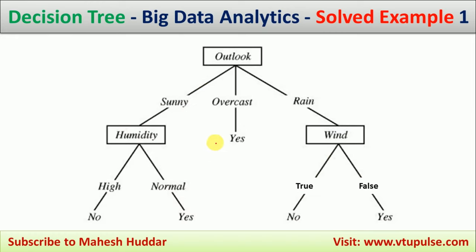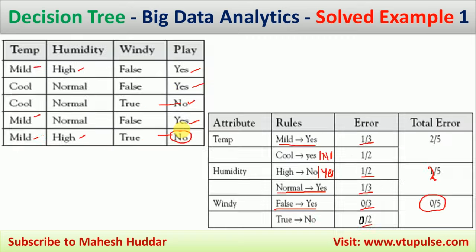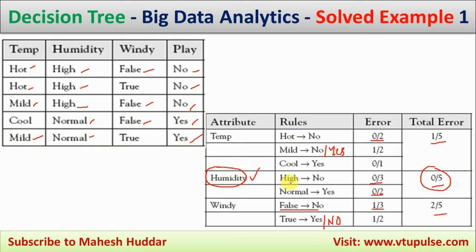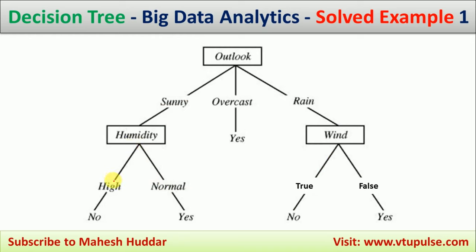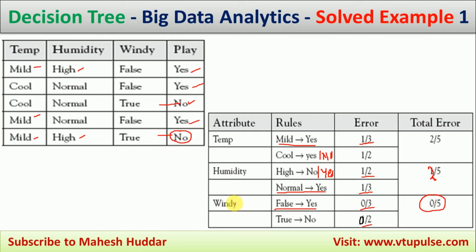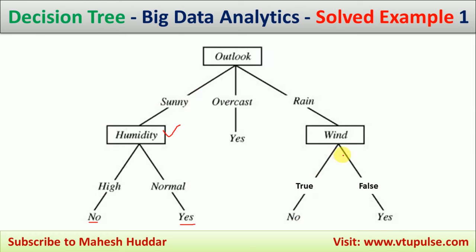Now we draw the final decision tree. For the sunny branch, humidity is the node: humidity = high gives the answer no (zero errors), humidity = normal gives the answer yes (zero errors). For the rainy branch, wind is the node: wind = false gives the answer yes (zero errors), wind = true gives the answer no (zero errors). This completes the optimal decision tree built using the CART algorithm.